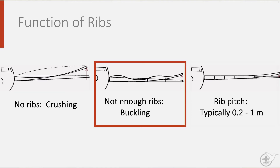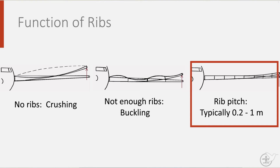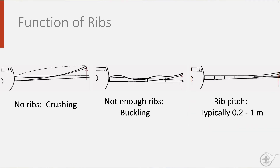That's why ribs are typically spaced 0.2 to 1 meter apart, ensuring sufficient distance. What type of rib to choose is then the logical next question that needs to be answered.